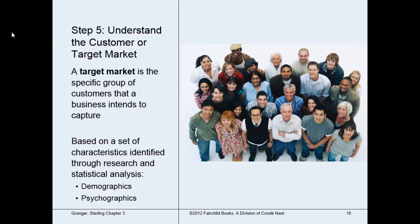Step five is to determine your target market — the customer most likely to purchase your products or services. Your target market is based on demographic characteristics such as age, gender, education, occupation, race, income, nationality, religion, and geographic location. The easiest way to find this information is through census data. Besides demographics, you also want to look at psychographics — the lifestyle and personality characteristics of consumers, including how they spend their time, their interests, hobbies, values, behaviors, and emotions. For example, a woman with three children and a woman with no children have very different lifestyles and use very different products.